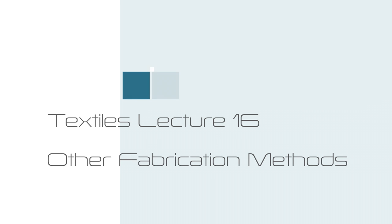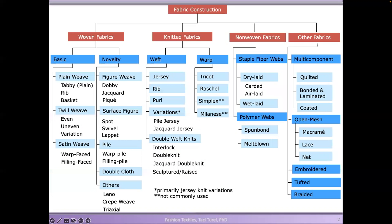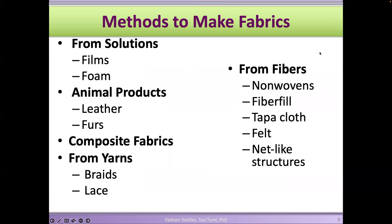We're going to continue with fabrics and talk about other fabrication methods. We've already talked about woven fabrics, weaving, and knitting. Now we're going to talk about other techniques used to make textile materials and fabrics. We can make fabrics from yarns, like in knitting and weaving, but we can also make them directly from solutions — you can put them on a cast and that gives you films or foam structures considered textile materials.